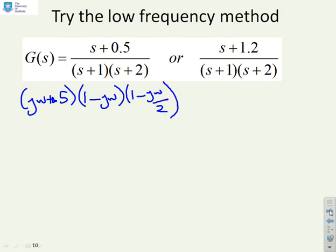If I multiply this out, I'm going to get 0.5 plus minus a quarter, minus a half plus 1 into jω, plus dot dot dot. I'm not going to calculate the higher order terms because I know I'm going to ignore them.